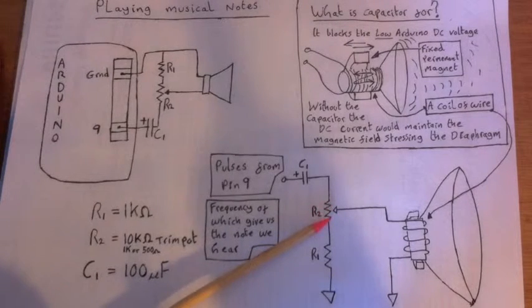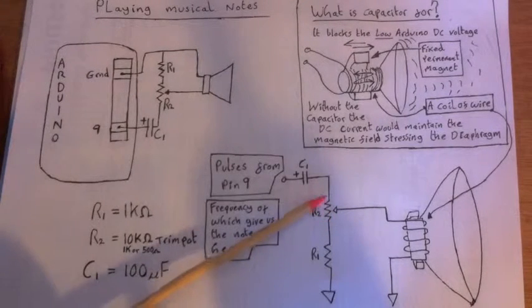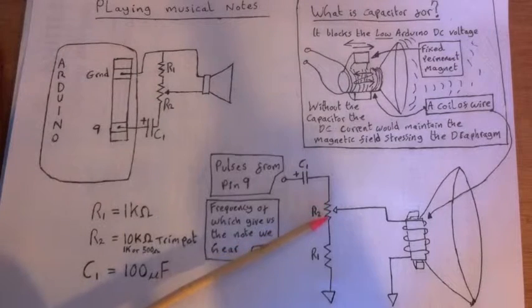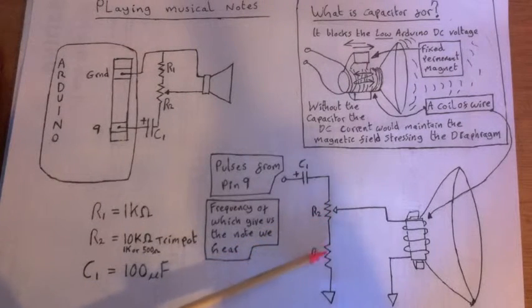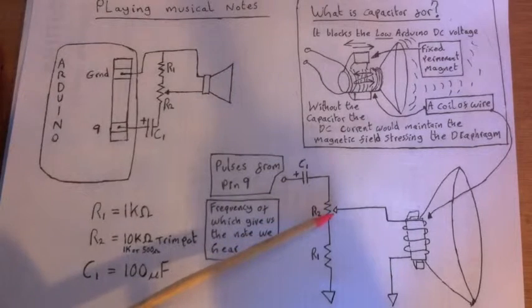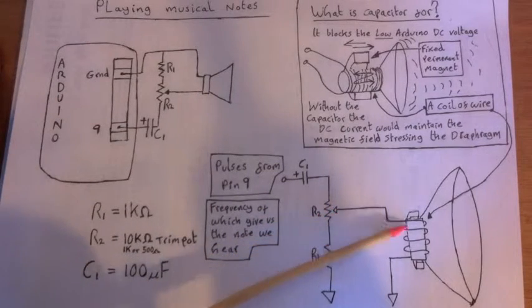Now if you move that wiper down to the bottom, you're going to get more voltage dropped across the top part of this resistor, and hardly anything, only the bit that's dropping across R1, which is a much smaller resistor. So you're going to get less current flowing through here.